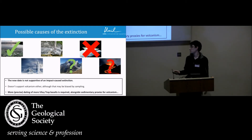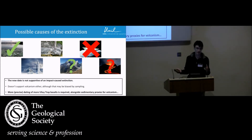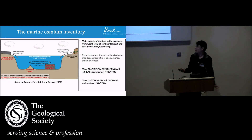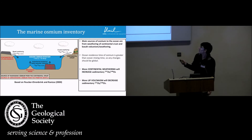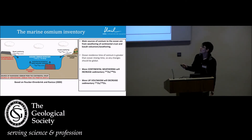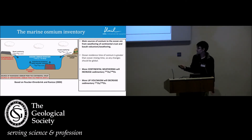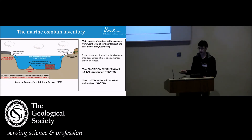Have we just not found the flood basalts that precisely coincide with the extinction yet? Alongside some sedimentary proxies for volcanism — if we look at the extinction horizons themselves, do we see traces of volcanism, or anything else? So we've looked at osmium isotopes of these sediments. These can tell you about both weathering and volcanism, because the continental crust has a very radiogenic osmium isotope signature, while the primitive mantle has a much more unradiogenic, very low Os-187/Os-188 ratio. High ratios indicate lots of weathering; very low ratios indicate lots of volcanism.